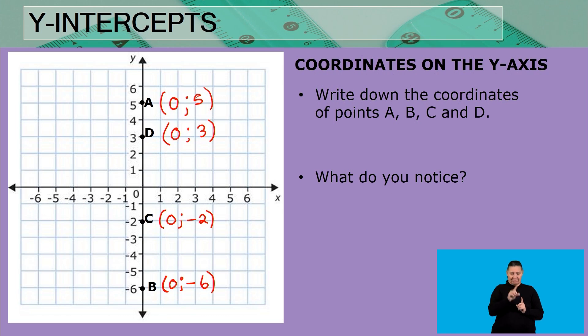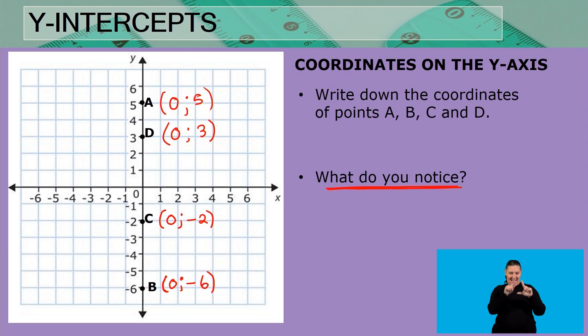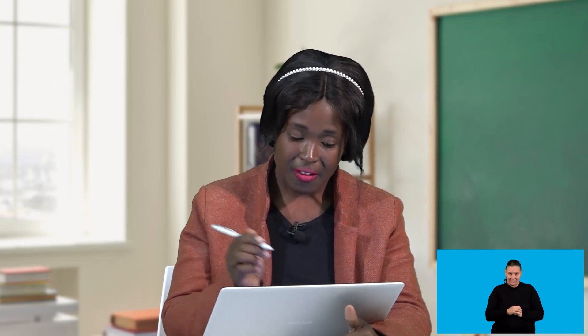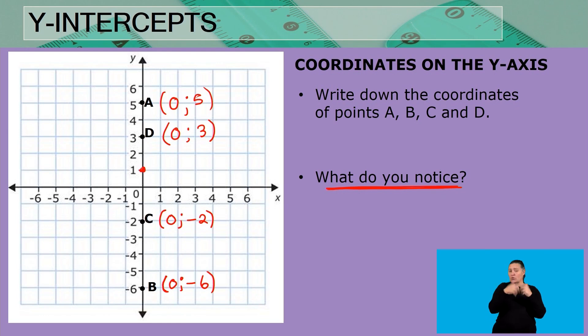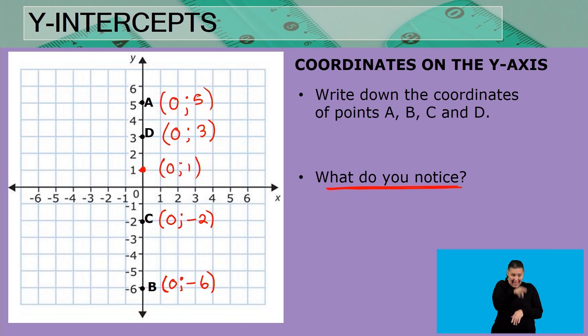Now that we've written those coordinates down, what do you notice? All of them are on the y-axis — what is common about all of these points? Correct: all of them have zero as the x value. So what can we say about any point on the y-axis? Even that point would be zero and one. Yes — x is equal to zero on the y-axis.